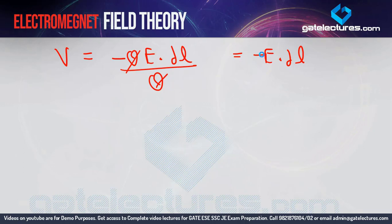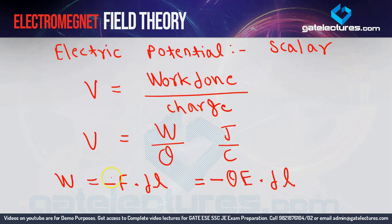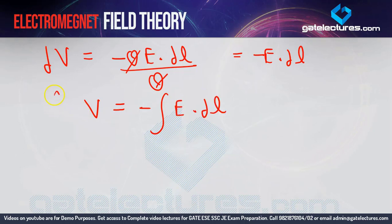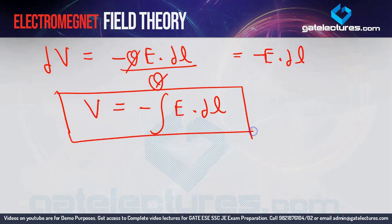You wrote F·dl, which means you are calculating dW. Since you calculated dl in length, dW is obtained, which means dV is calculated. If you want to calculate V, you have to integrate this. This is your standard formula: V = -∫E·dl. If you know the value of electric field, you can calculate potential. Electric potential is a scalar value — as you can see, this is a dot product, and a dot product is always scalar.